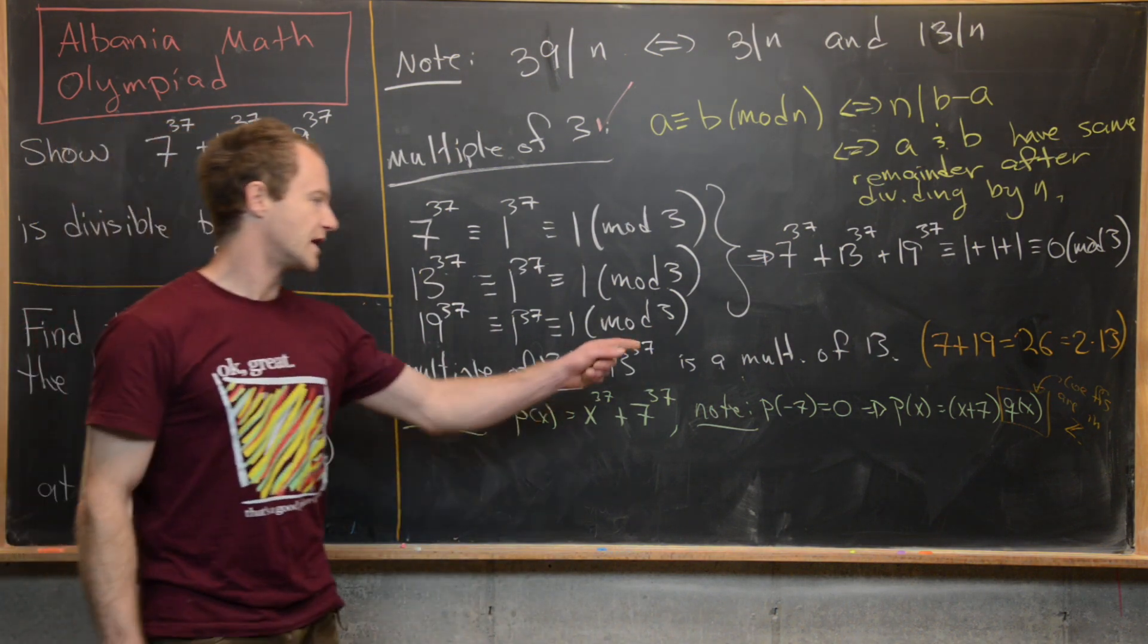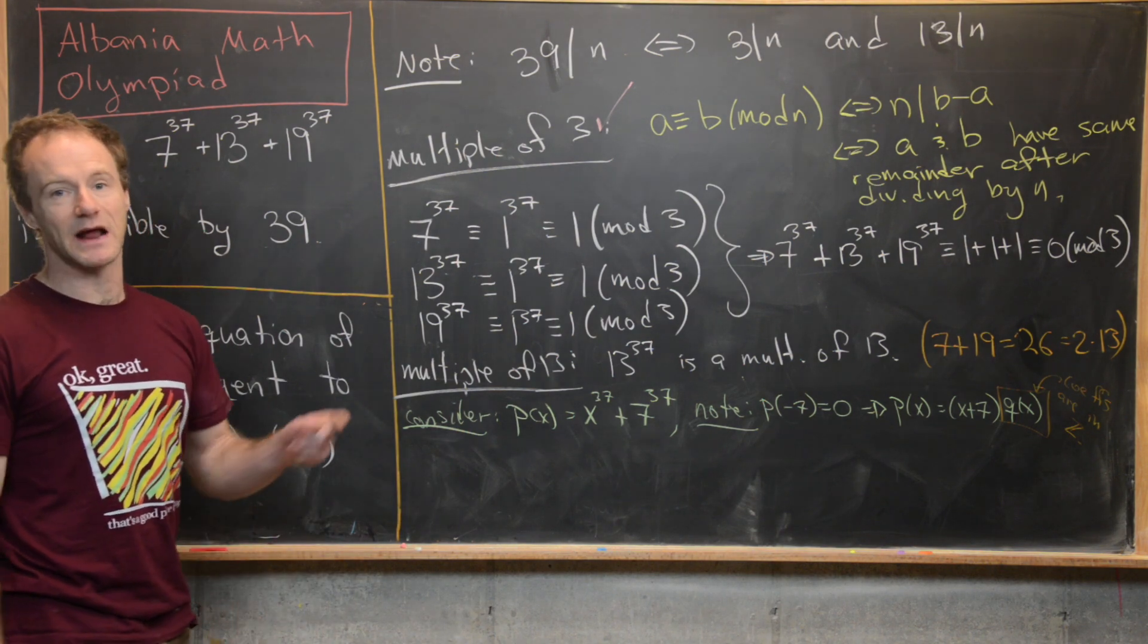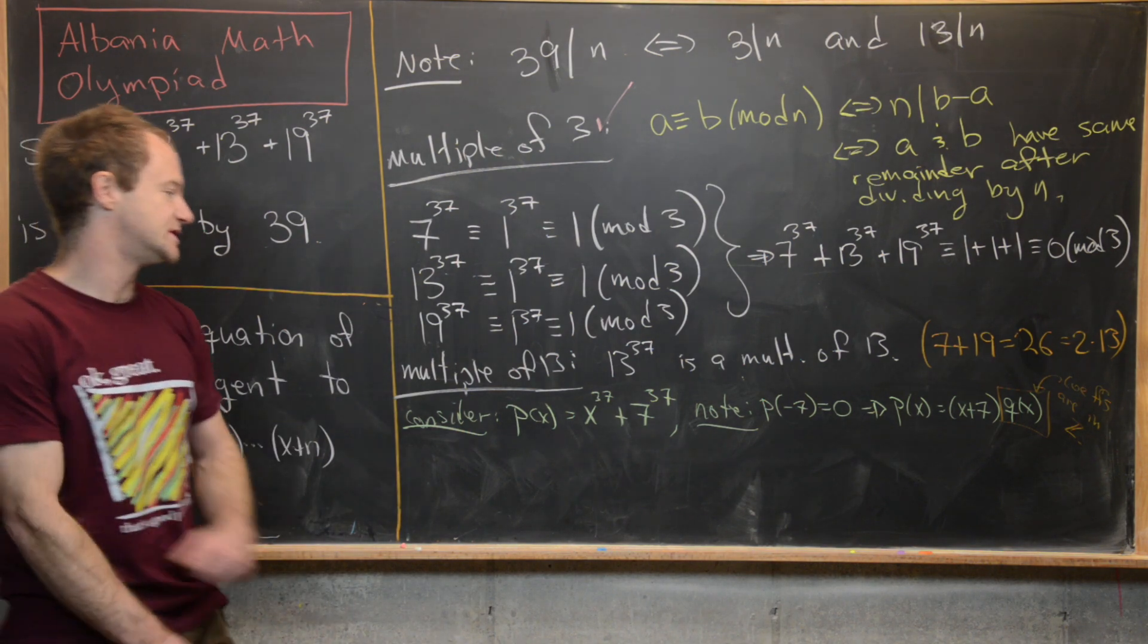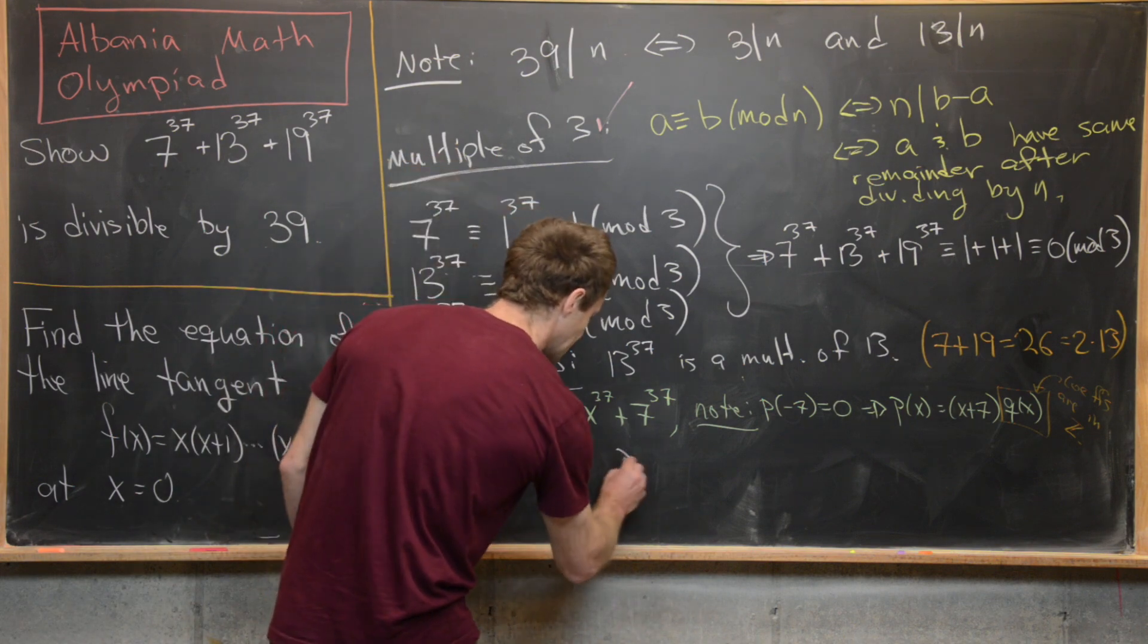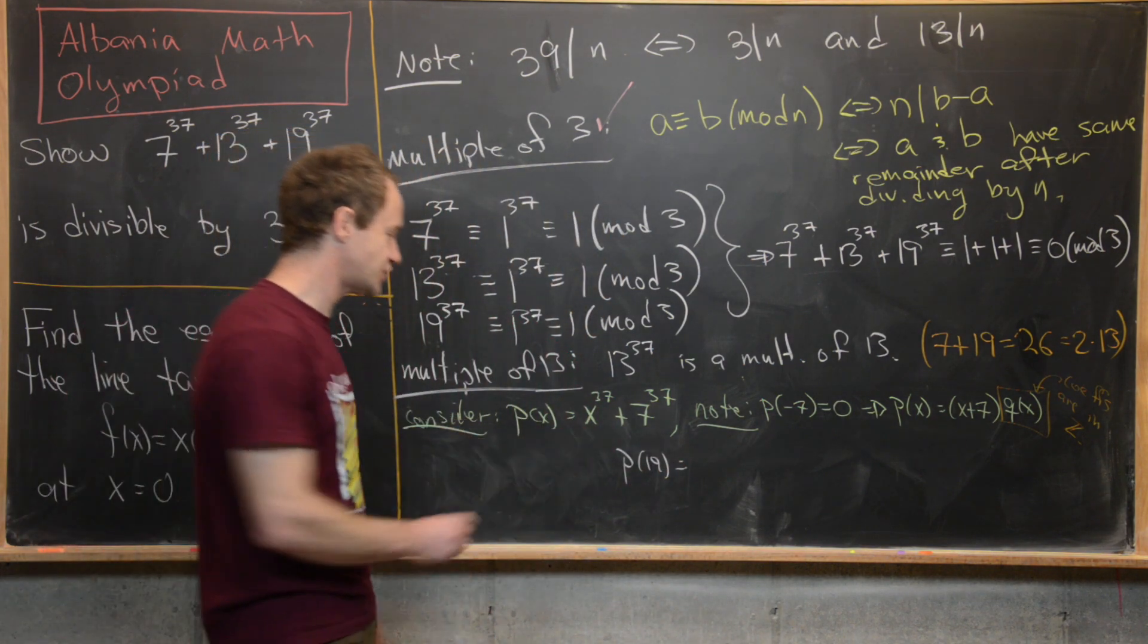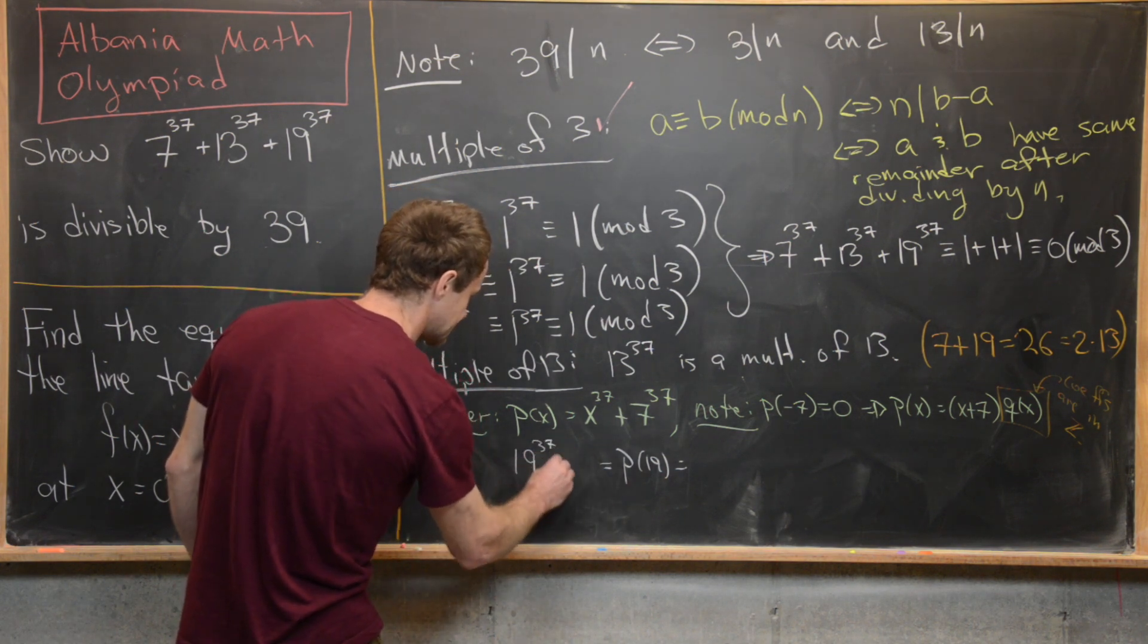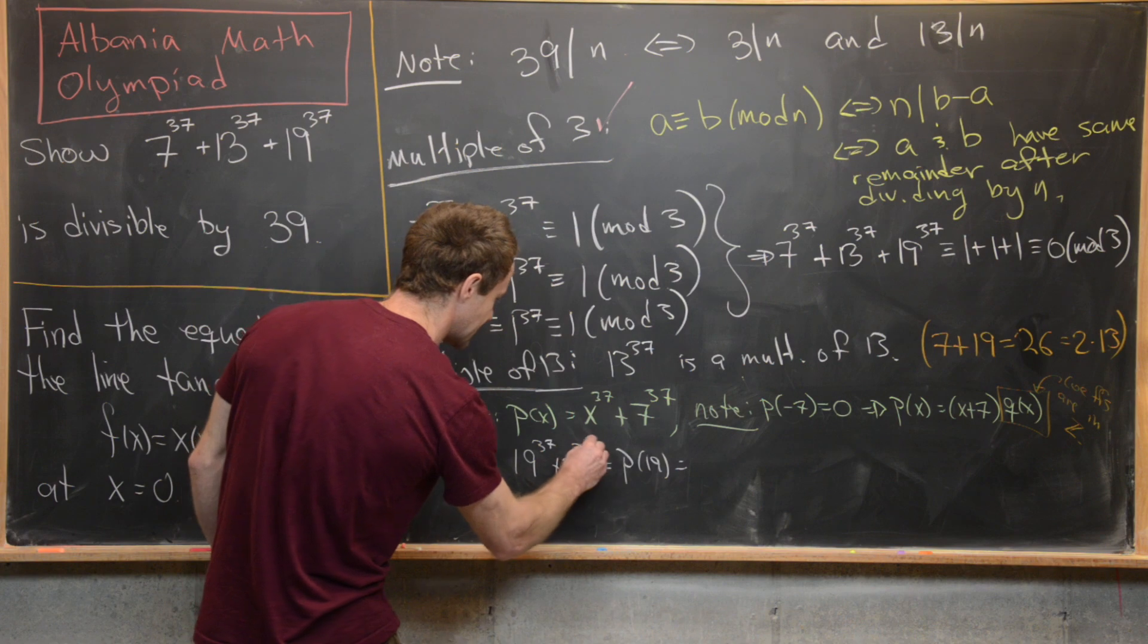But now what I want to do is evaluate this polynomial at 19. But I'm going to evaluate that two different ways. So I'll evaluate it at 19. And then using the definition, that's going to be equal to 19^37 + 7^37.